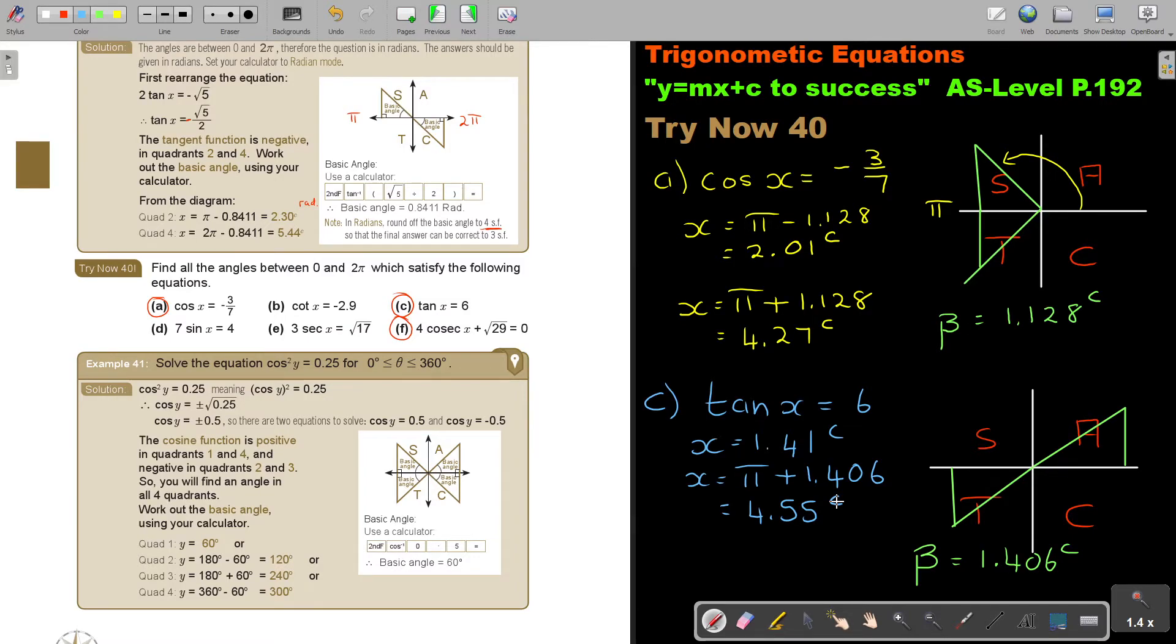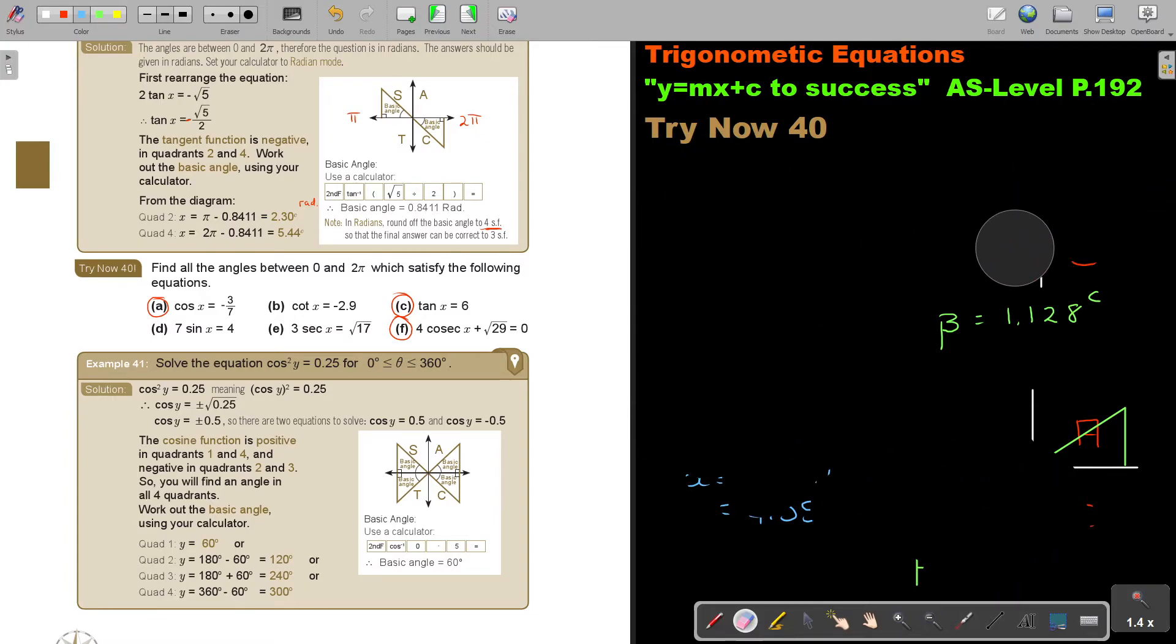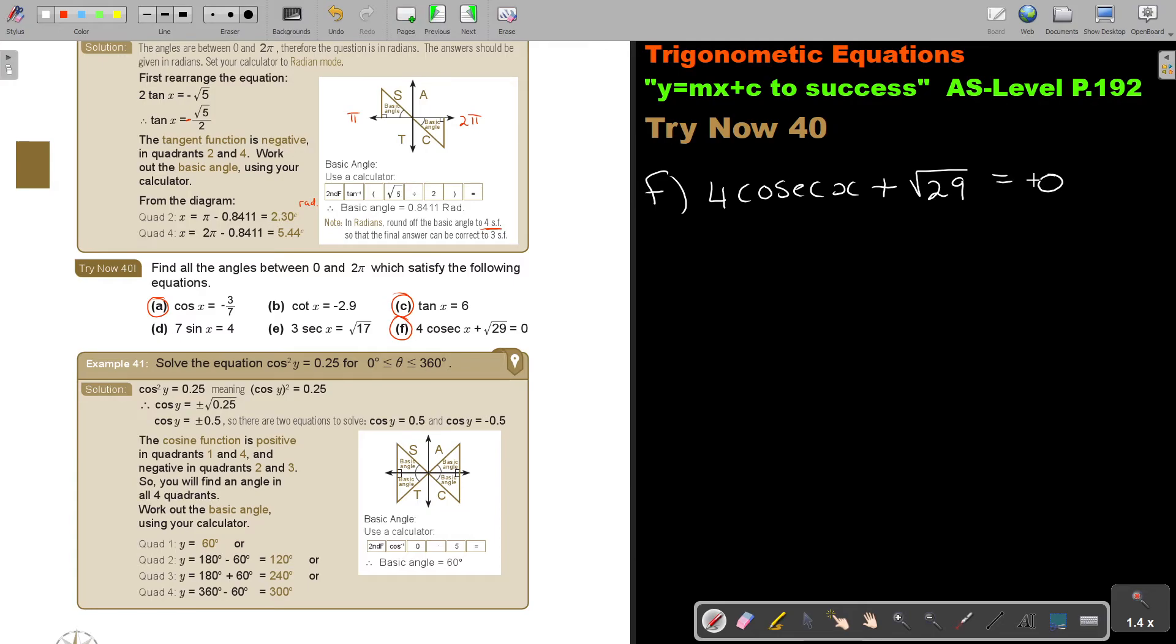Let's do the last one, f. So 4 cosec x plus square root 29 is equal to 0. So first we must simplify that. Let's first take that over. It's negative square root 29. Then I divide 4 and I divide 4. And now I change. What is my third letter? So I change. So I will say sin x equals and I swap around.